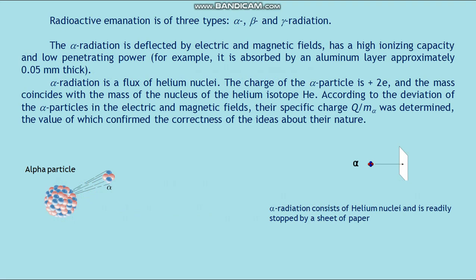Radioactive emanation is of three types: alpha, beta, and gamma radiation. The alpha radiation is deflected by electric and magnetic fields, has a high ionizing capacity, and low penetrating power. For example, it is absorbed by an aluminum layer approximately 0.05 millimeter thick.